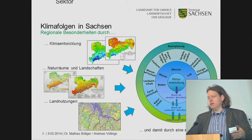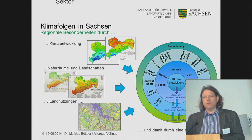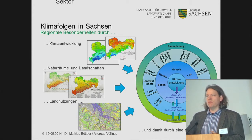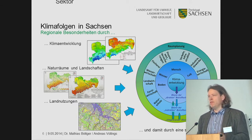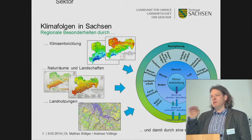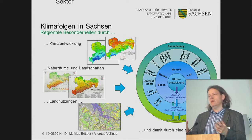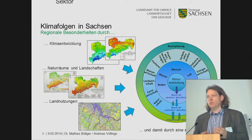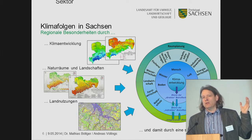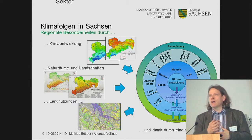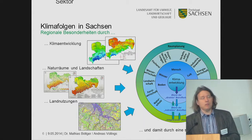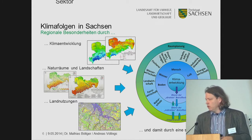In Saxony, we studied climate development. When we talk about climate impacts in the future, we don't have one future — we have to take into consideration a whole ensemble of different futures. We also have different landscapes and different natural realms in Saxony. That's why we cannot use the results of federal studies, since districts like Erzgebirge and Görlitz have very different landscapes, and we also have different kinds of land use.